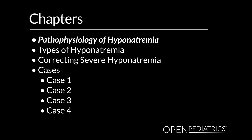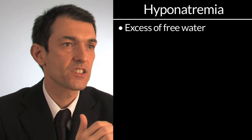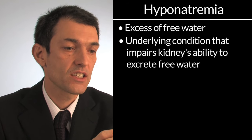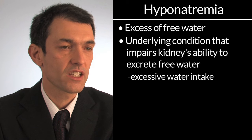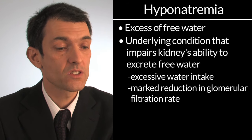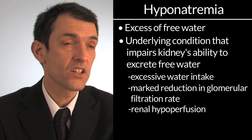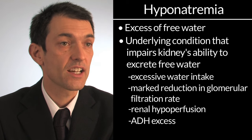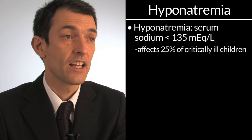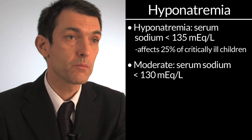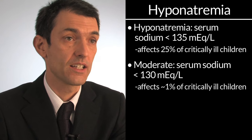Pathophysiology of hyponatremia. You have hyponatremia when there is a relative excess of free water with an underlying condition that impairs the kid's inability to excrete free water. This might happen in case of excessive intake of water, marked reduction in the glomerular filtration rate, renal hyperperfusion, or ADH excess. This condition affects 25% of critically ill children. It is considered moderate if sodium is below 130, affecting more than 1% of hospitalized children.